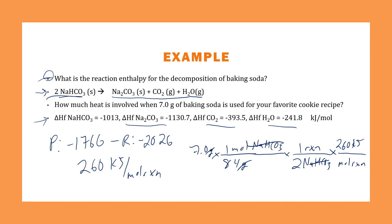And then finally, we have 260 kilojoules for every mole of reaction. So moles cancel, reactions cancel. And so now we will be left with just kilojoules. So you can multiply and divide. You'll get that there are 10.8 kilojoules absorbed when 7 grams of baking soda is used. And we know it's absorbed as a positive value. It's endothermic.